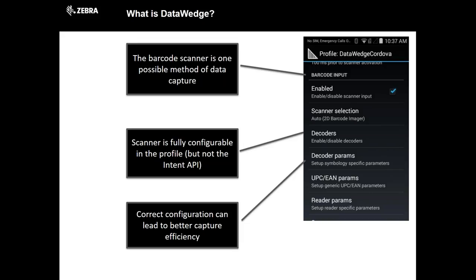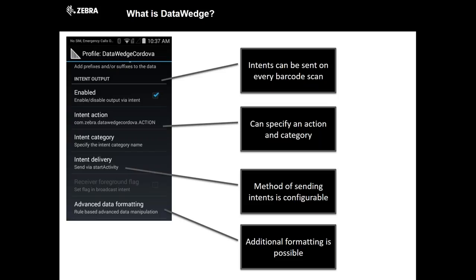Once DataWedge has captured that barcode, we then want to output it somehow, and this is where we get into the interface to the Cordova application. We're sending typical Android intents — we've enabled the intent output and given it an action. This action needs to correspond with the action we're listening to in the Cordova application. You can choose to have DataWedge deliver this intent via start activity or send broadcast. For these particular third-party plugins, start activity seems to work the best.